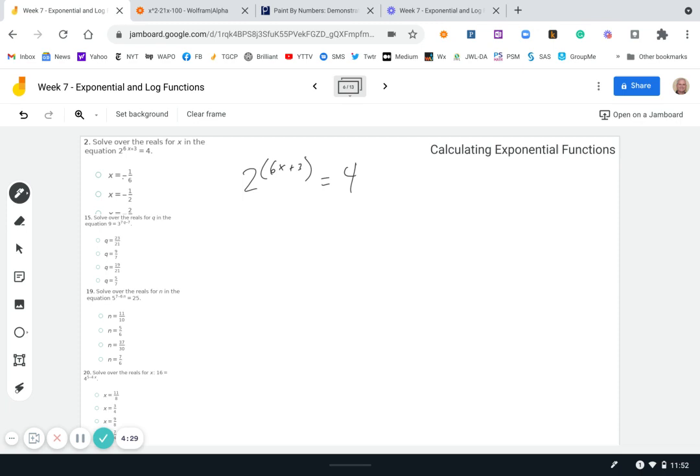That's pretty straightforward if we take the right-hand side and break it down as a power of 2. So we're going to say 2 to the 6x plus 3 equals 2 to the 2. Now that we have it set up with both bases being the same, we can simply set the exponents equal to each other. 6x plus 3 equals 2. So now we know 6x equals negative 1, x equals negative 1/6, and that is this answer here.